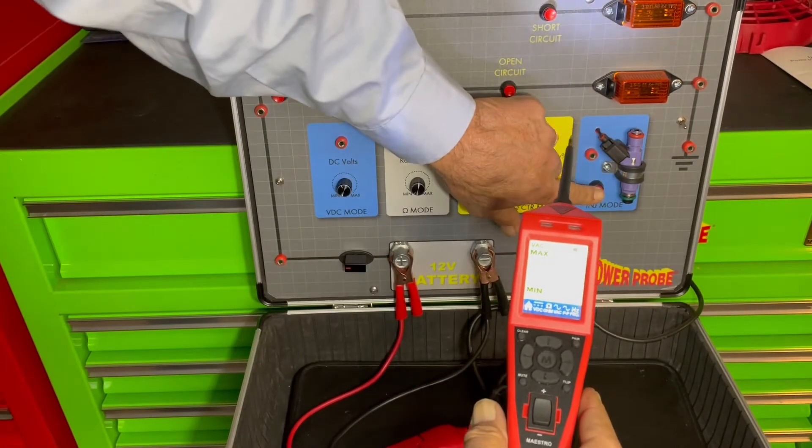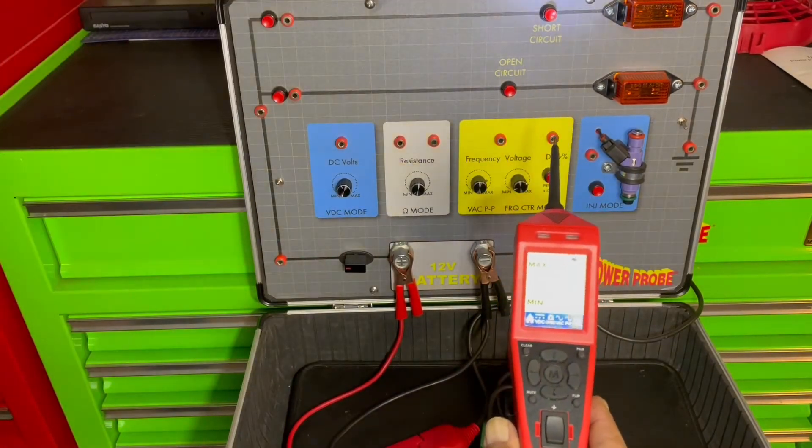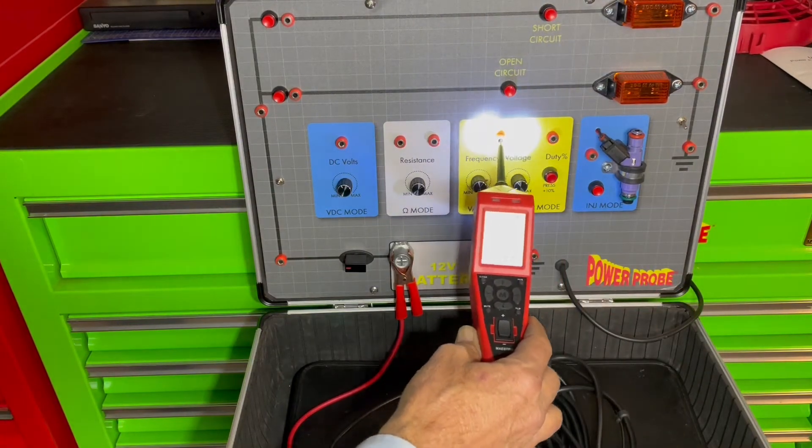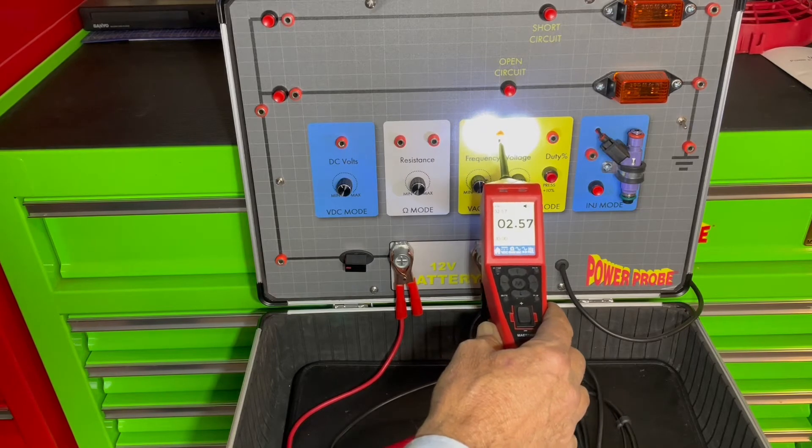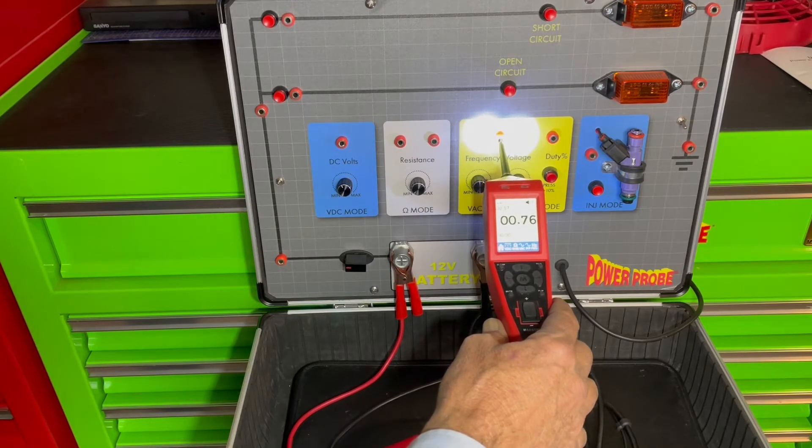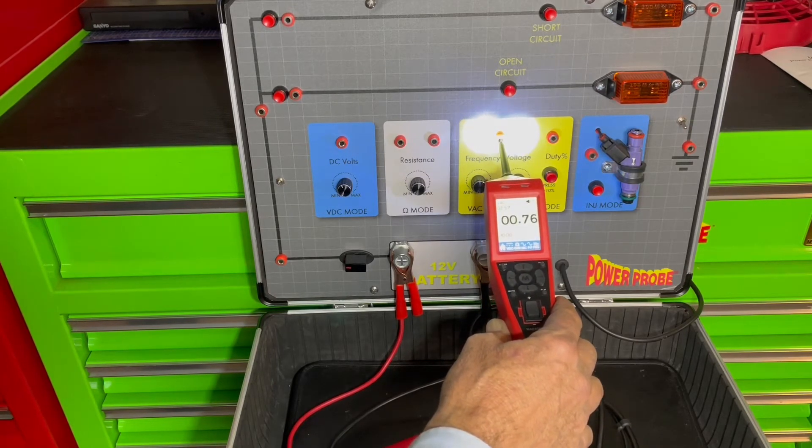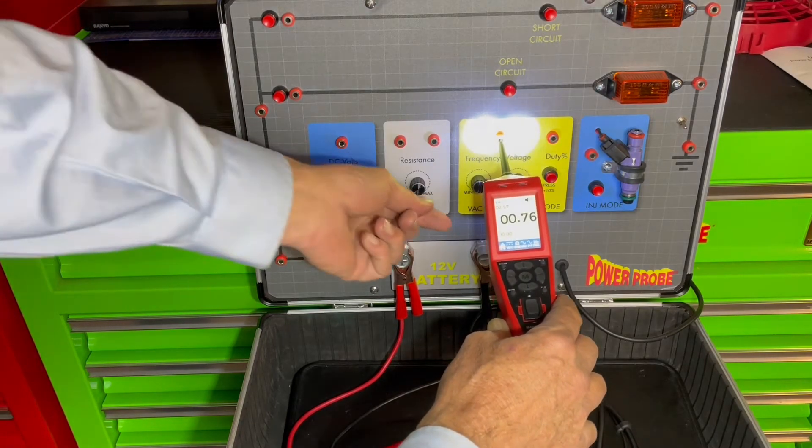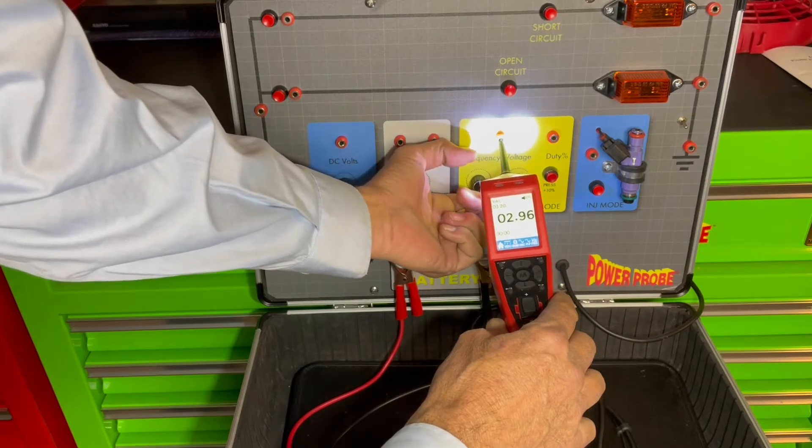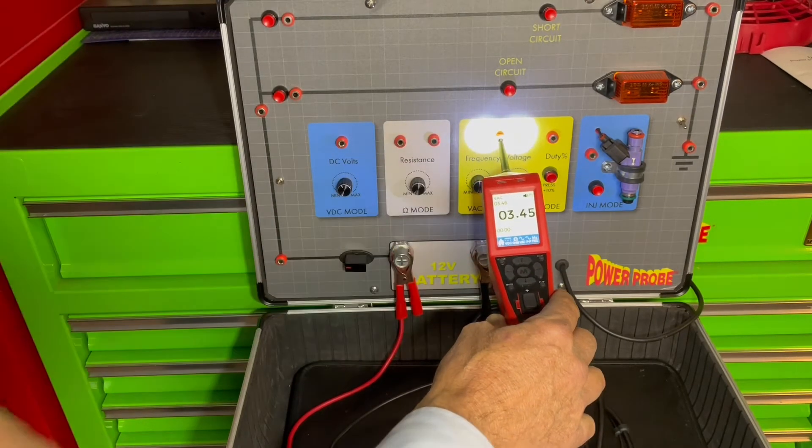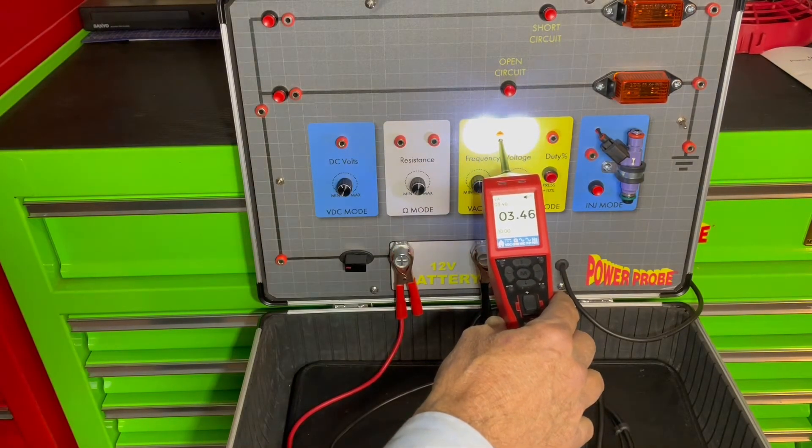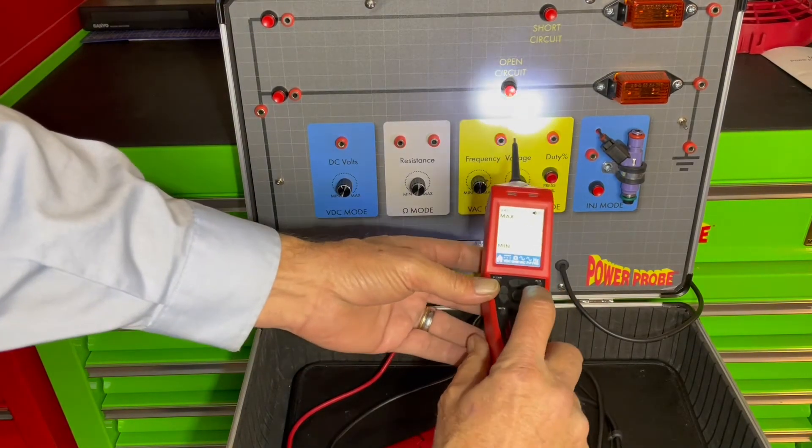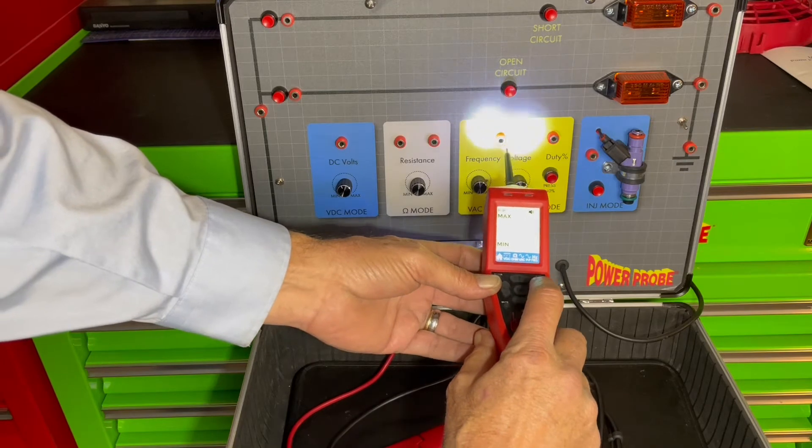And turn on our AC signal generator. Now let's go to an AC voltage. You'll see it displays a number, you've got your min and your max voltage on the left hand side. We can give it a little more voltage.